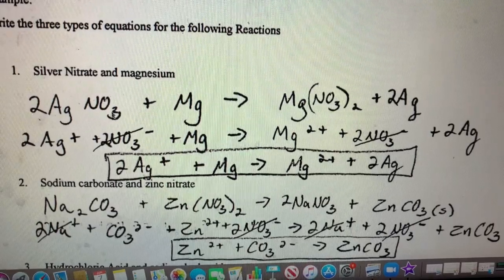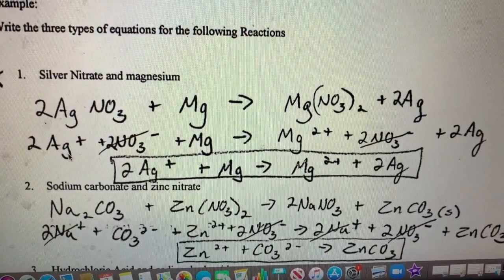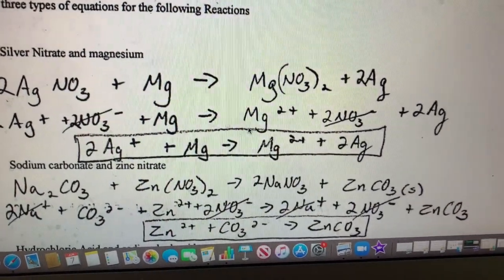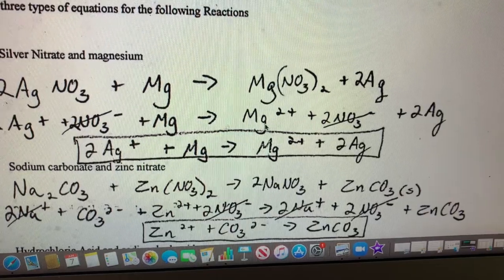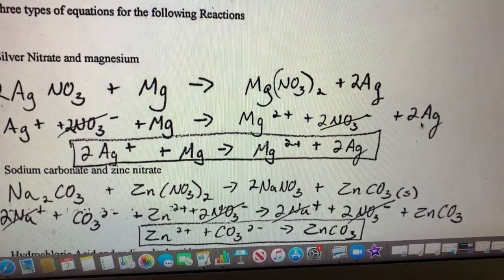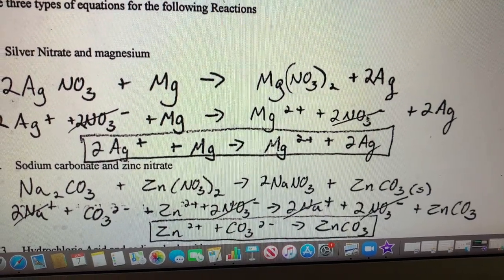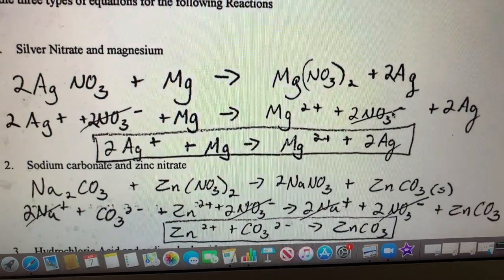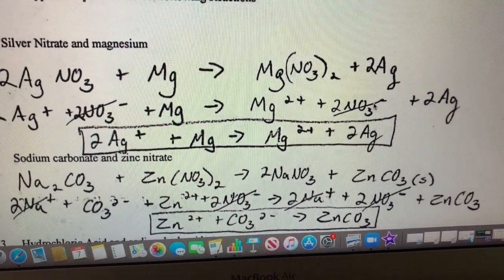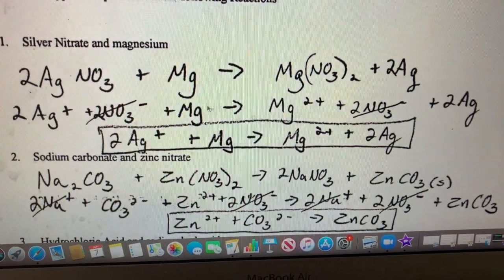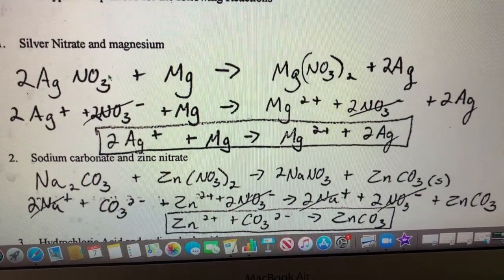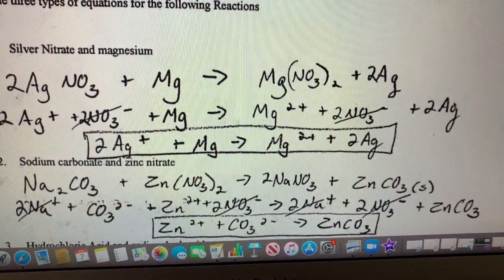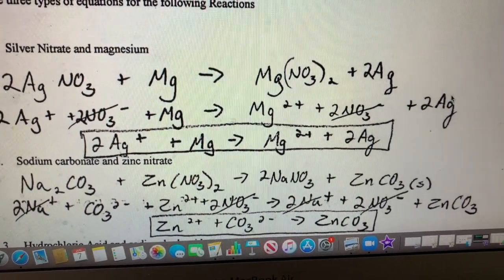When I write the ionic equation, I'm taking silver nitrate and writing it as its ions: two silver ions plus two nitrate ions. Magnesium stays the same. What's it giving me? A magnesium ion, two nitrate ions, and two silver metals. My spectator ion in this equation is nitrate, so that gets crossed out. Nitrate did not change from left to right. The other two, however, silver and magnesium, certainly did. Silver went from having a plus one charge to having no charge at all. That is a huge difference. Remember, charges matter.